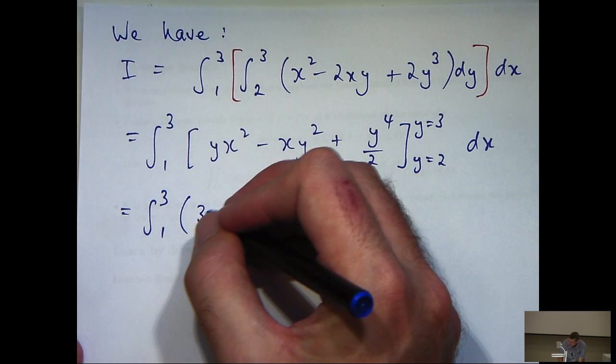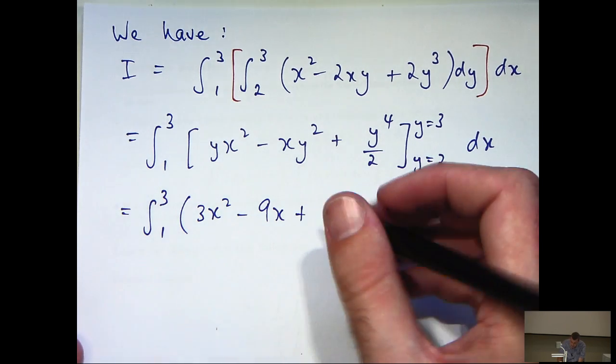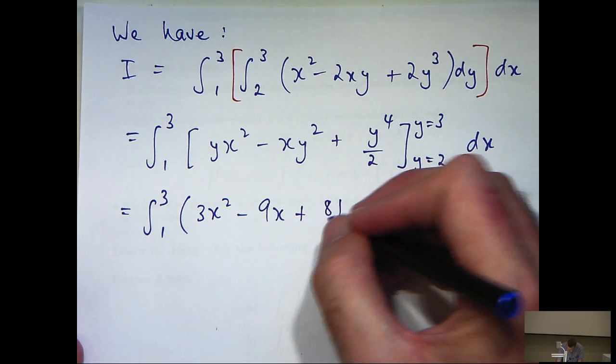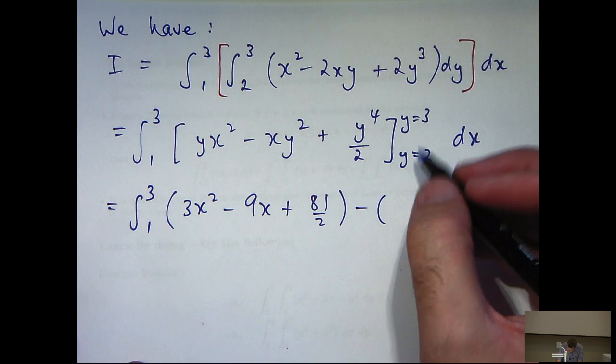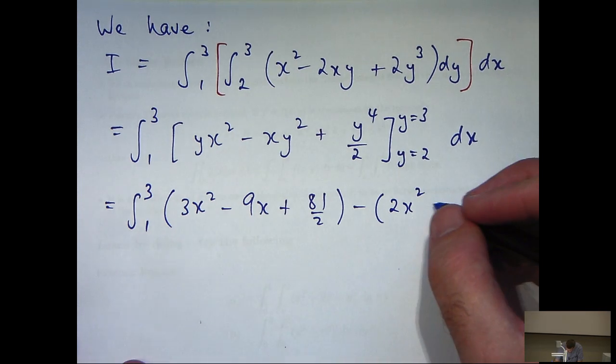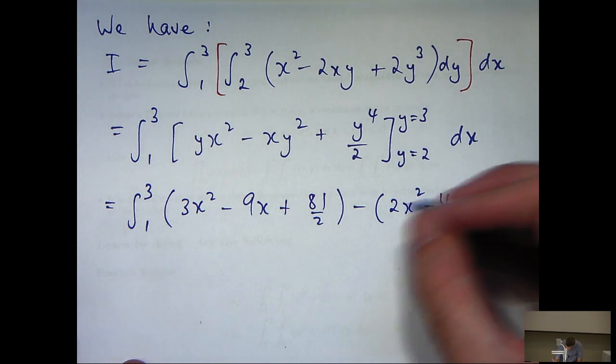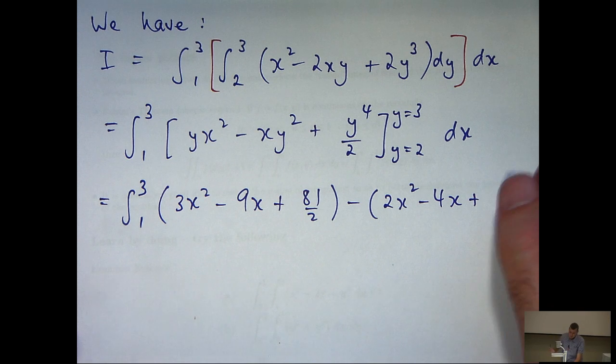So now we sub in for y equals 3 and y equals 2. So I'll get 3x squared minus 9x plus 81 over two, minus, substitute y equals 2, 2x squared minus 4x plus 8.